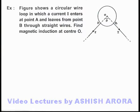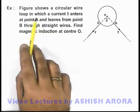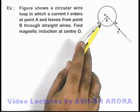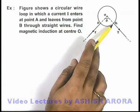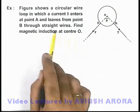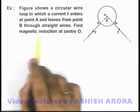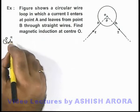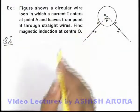In this example, figure shows a circular wire loop in which a current i enters at point A and leaves at point B through straight wires. We are required to find magnetic induction at the circle center at point O.